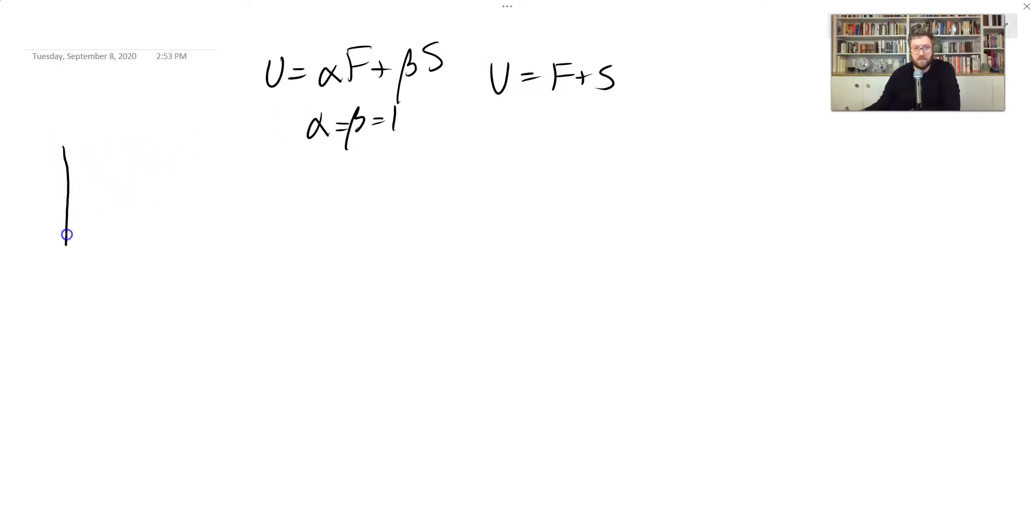So what does the indifference curve look like in this case? Well, they're just straight lines with slope equal to 1. If I had done alpha and beta different and equal to something else, then the slope would be some ratio of the two. But right now, the slope is just equal to 1. These are the indifference curves.